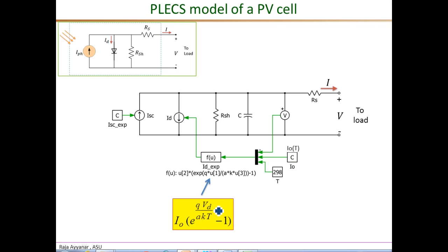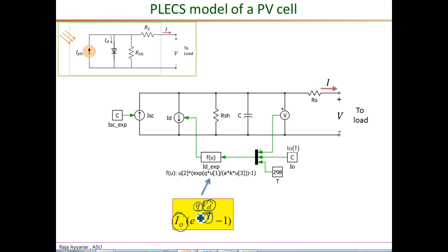The diode equation is implemented exactly in the function block of Plex. The diode voltage Vd required here is directly measured from simulation through a voltmeter and applied as an input to this function block. The other variables — the dark saturation current I_O and the temperature T — are defined as two separate variables in order to study the impact of temperature on the characteristics of the diode and therefore on the PV cell. The other constants such as Q, K, and the ideality factor A are implemented as simple constants inside the definition of this function block.